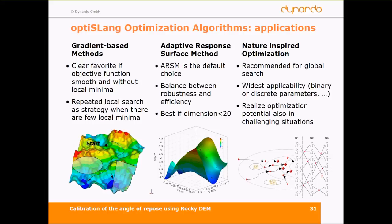To do this we choose an optimizer to find the best fit. Options include gradient-based, which works well only if we have a smooth function without local minima; the adaptive response surface method, which is more or less the default choice; and the nature-inspired optimization group, which includes evolutionary algorithms and PSO. In this example we use the gradient-based method because we have a very smooth function and only one important parameter.